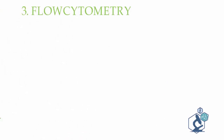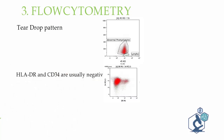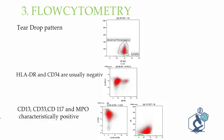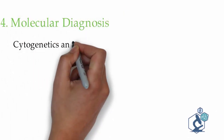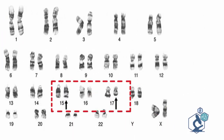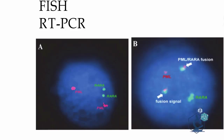Flow cytometric evaluation of APML produces a teardrop pattern on CD45 side-scatter plots. CD34 and HLA-DR are negative; CD13, CD33, CD117, and MPO are positive. Molecular diagnosis of PML-RARA fusion can be done by cytogenetics and karyotyping, FISH, or RT-PCR. Karyotyping shows t(15;17) translocation. FISH metaphase analysis shows two distinct signals for PML and RARA as red and green respectively, whereas in APML the red and green signals combine together as fusion signals.